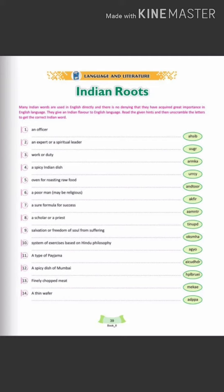Oven for roasting raw food, that is called tandoor. A poor man who is religious, that is called fakir. A sure formula for success, that is mantra. A scholar or priest, that is called pandit.